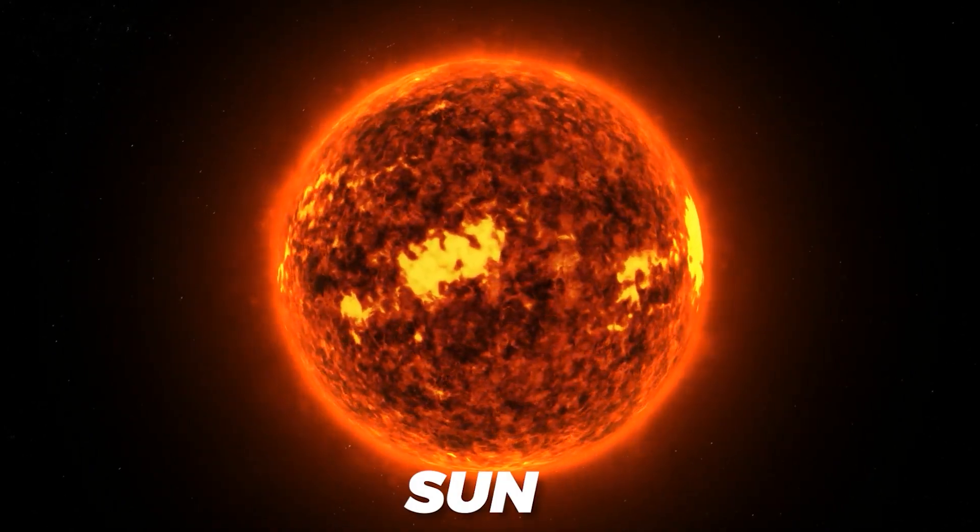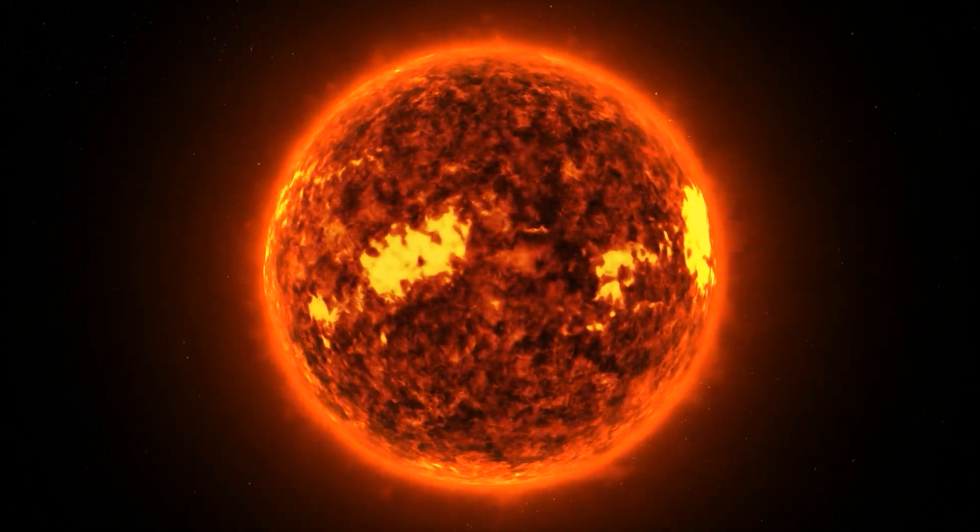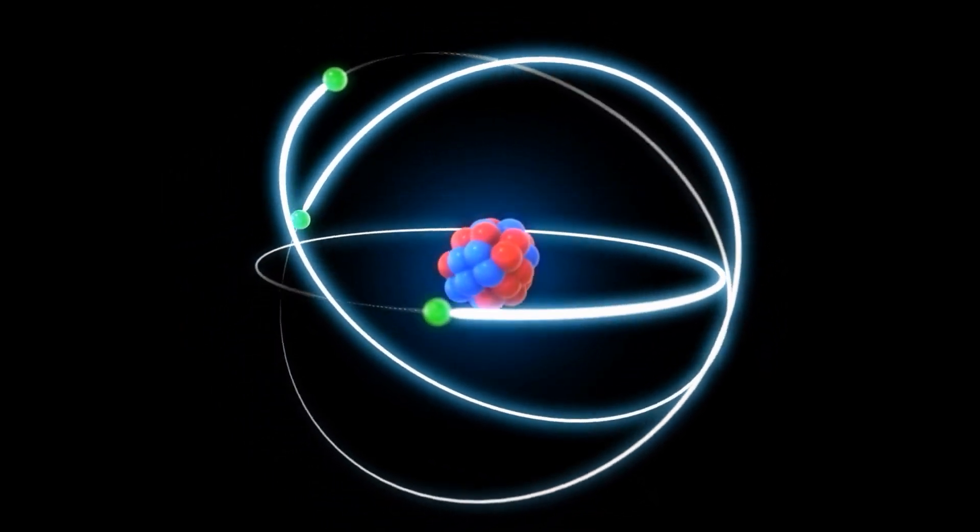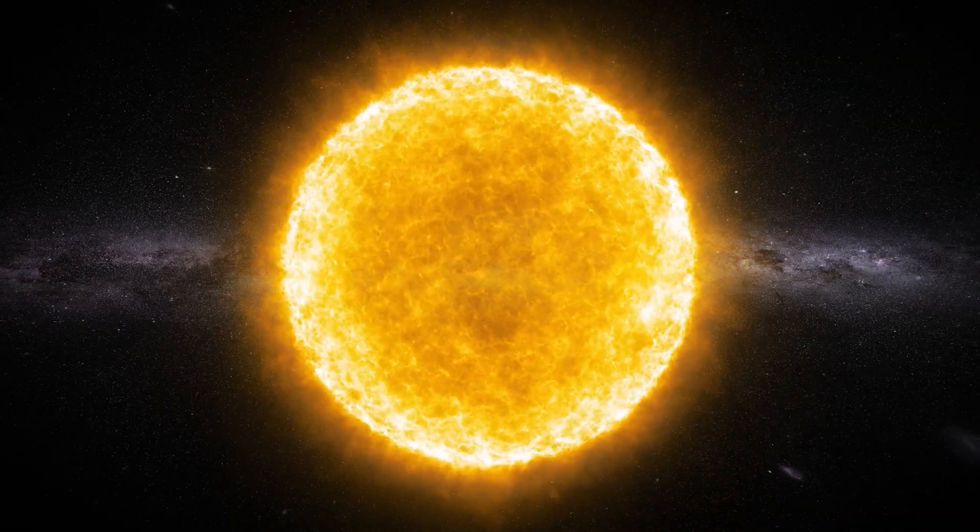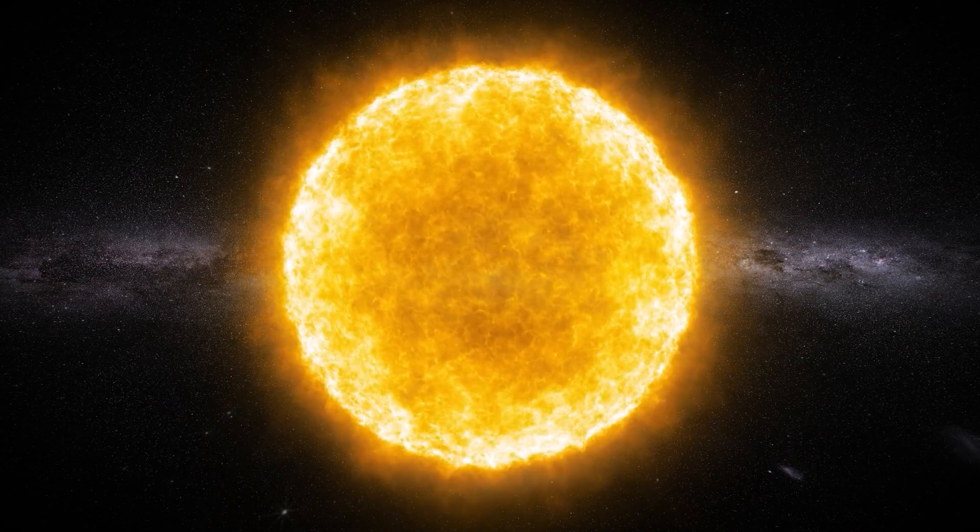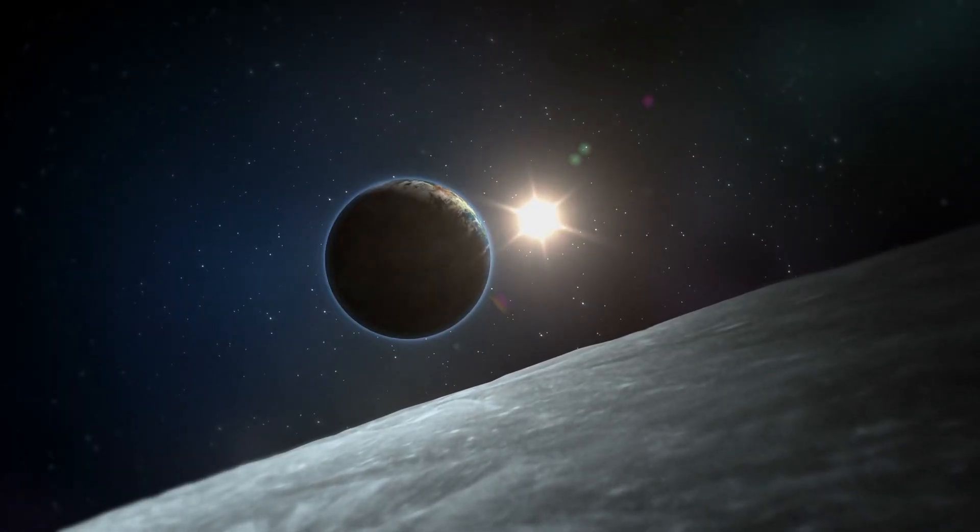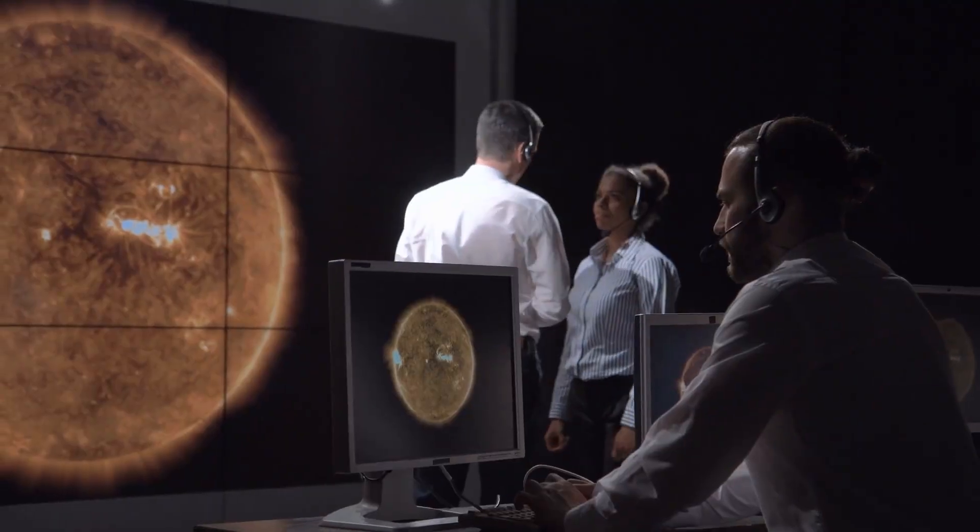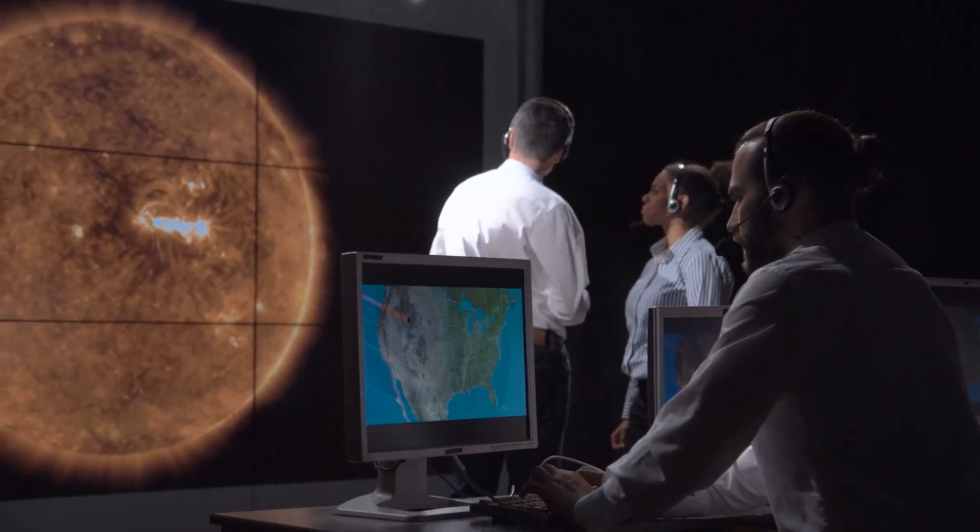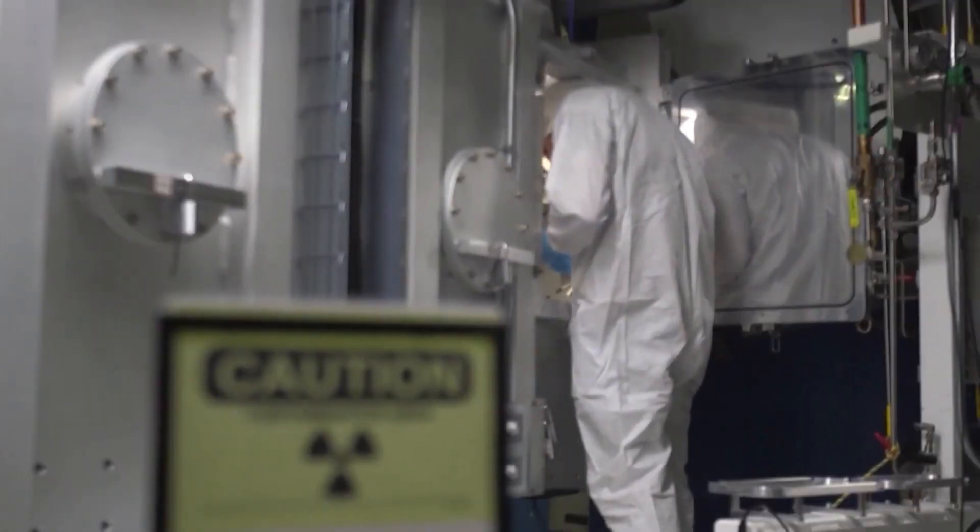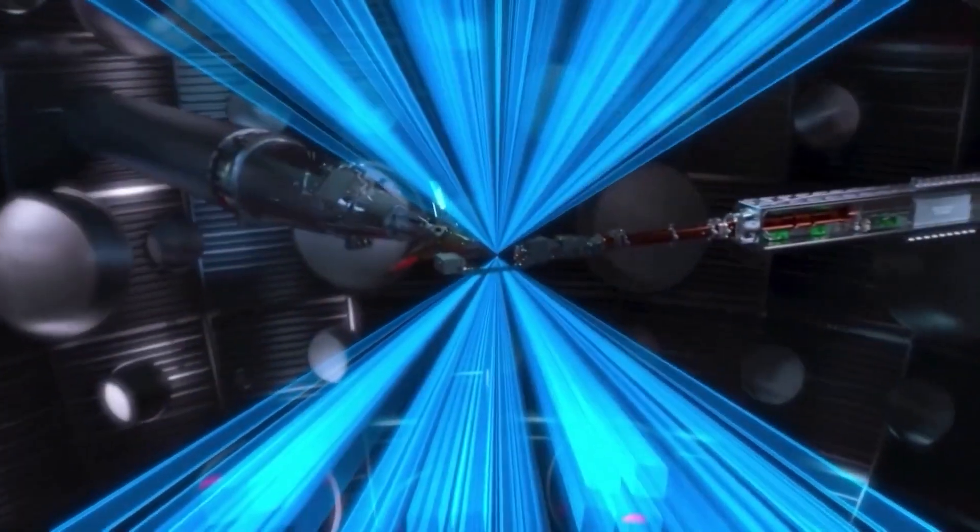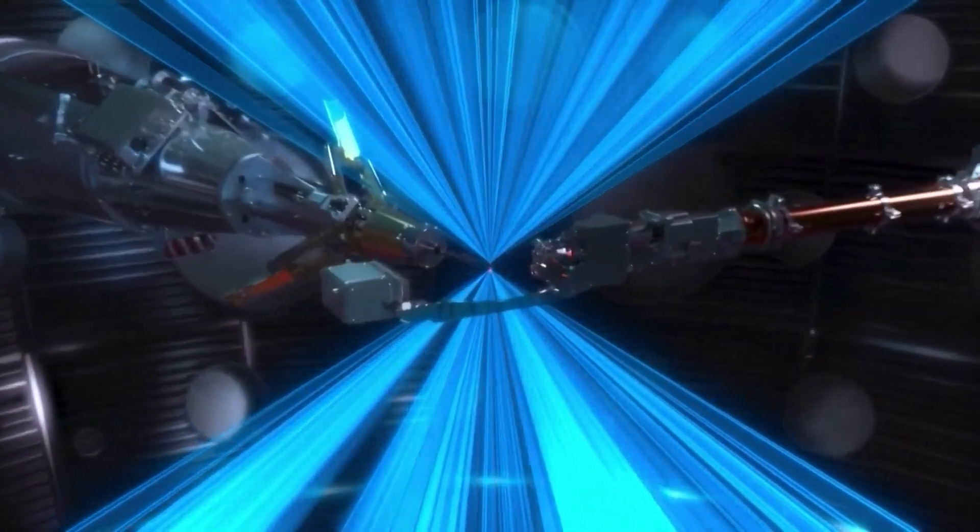In stars like the sun, the fusion process primarily involves combining hydrogen nuclei, protons, to form helium. This is known as the proton-proton chain reaction. The energy produced through this fusion process is what sustains the sun's heat and light, allowing it to shine for billions of years. On Earth, scientists and engineers have been trying for years to replicate controlled nuclear fusion as a potentially limitless and clean energy source, but the results have been less than desirable so far. Well, until now.